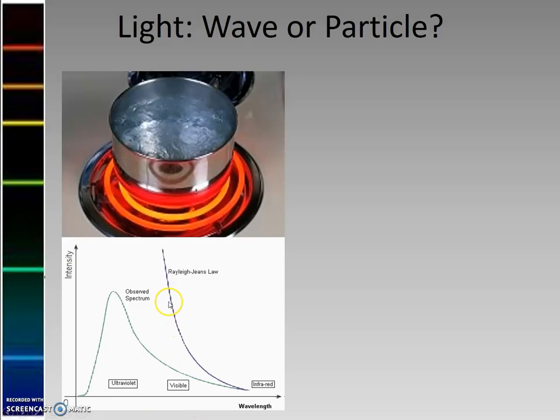That was odd because the theory, where they said light was a wave, predicted that it should always keep going up. As the wavelength got shorter, they should get more and more light of that kind.